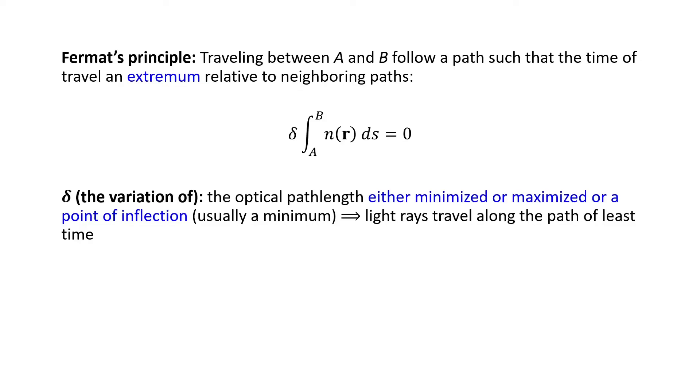From that, we conclude that light rays travel along the path of least time. Is it possible to have more than one path between two points that minimizes the least time condition? The answer is yes, and we will see some examples in the next lectures.